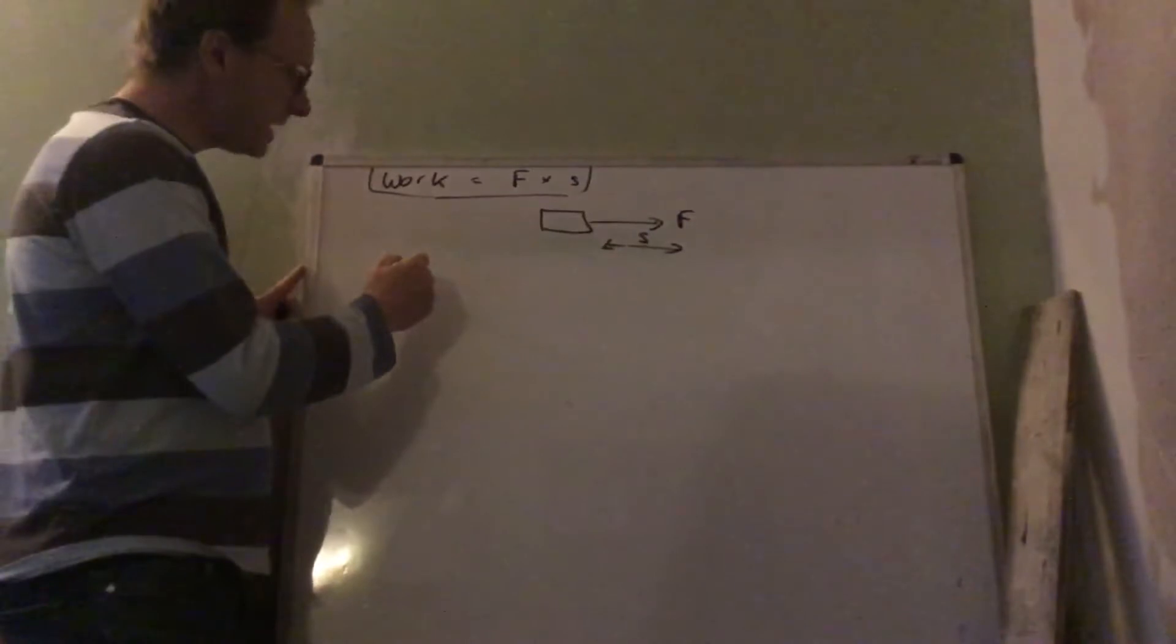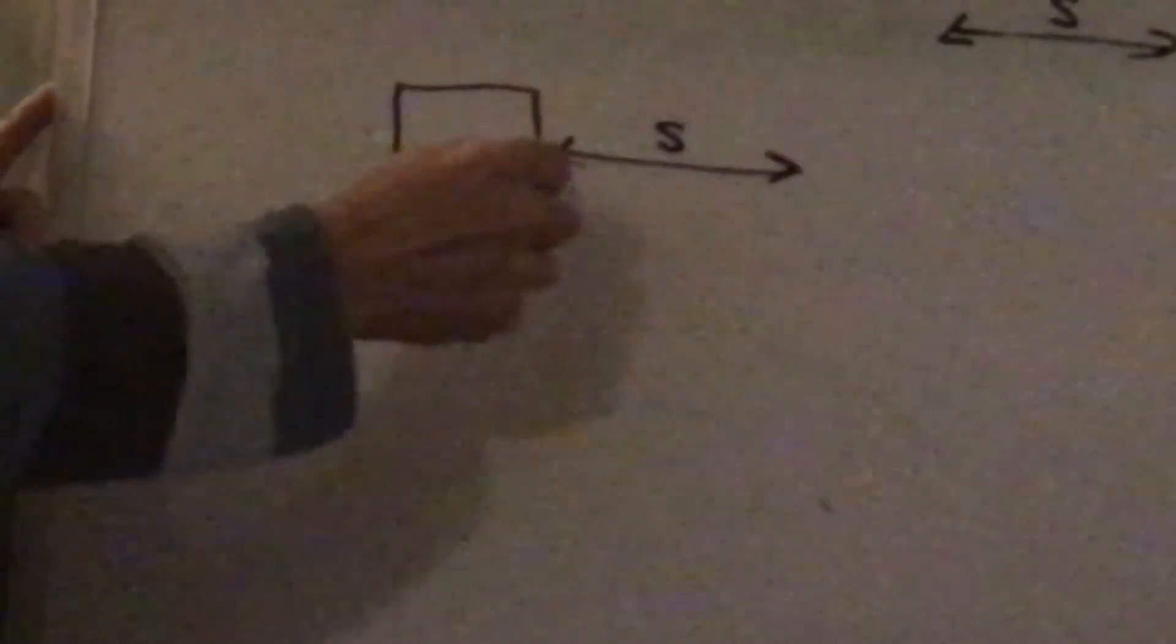Push it at an angle - so we're pushing it at an angle but it actually moves that way, so the force is going down there. Well then, only this part of the force is useful moving it forwards, so we have here an angle and we end up with work equals F S cos theta.